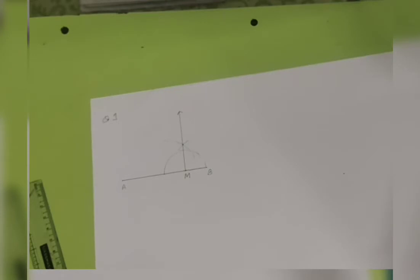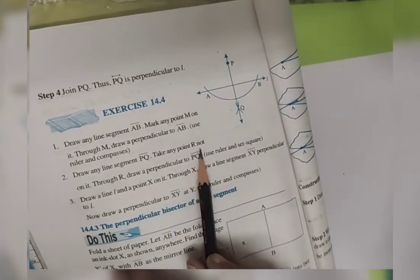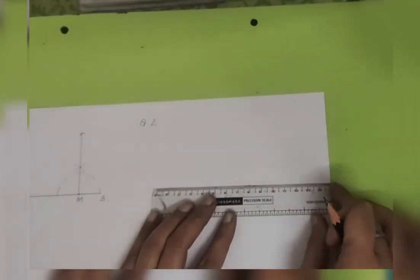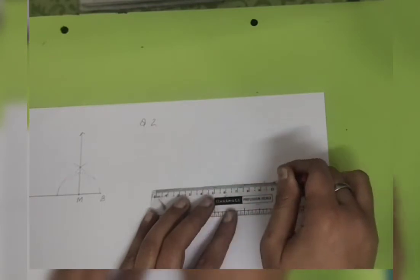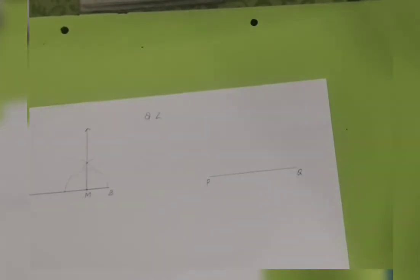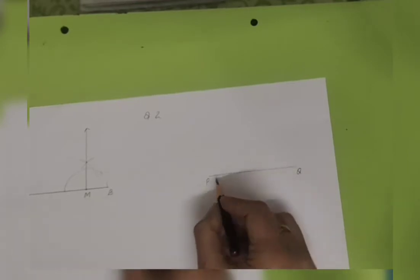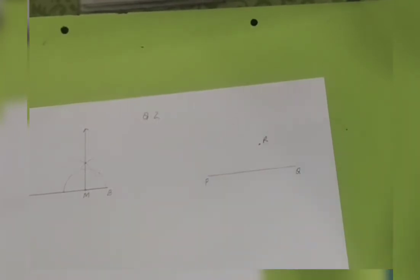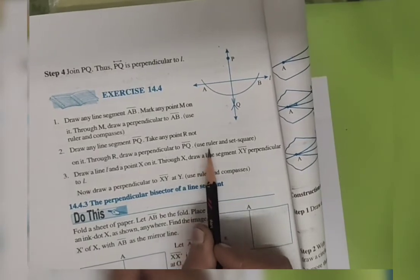Now question number two. It says: draw any line segment PQ. It is similar to question one, but this time we need to take a point R that is not on PQ. So first, I'm drawing line segment PQ. Then I take point R not on it — I have taken it here, away from the line segment.